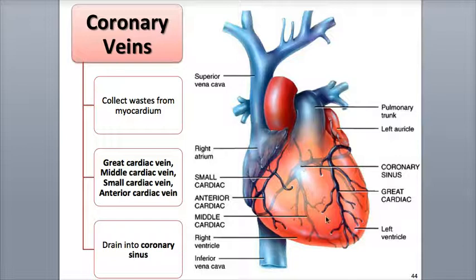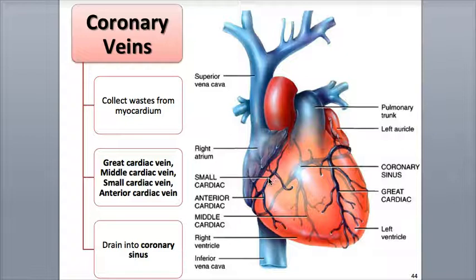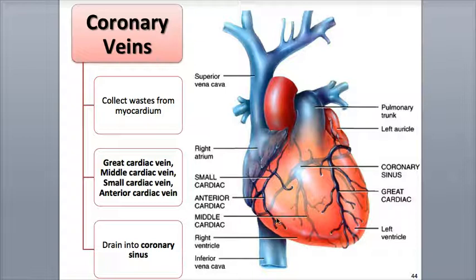The major coronary veins include the great cardiac vein, found in the anterior interventricular sulcus, which drains blood from the walls of the left atrium and the right and left ventricles. The small cardiac vein, located in the coronary sulcus on the anterior surface of the heart, drains the right atrium and the right ventricle. Also on the anterior surface, the anterior cardiac vein drains the right ventricle. Looking through the transparent heart wall to the posterior surface, we see the middle cardiac vein, found in the posterior interventricular sulcus, which drains the right and left ventricles.